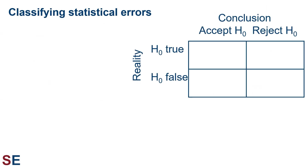There are two basic types of errors we can make when we use sample data to test a hypothesis about a population. In the diagram to the right, we've shown a standard way of thinking about this. We have a null hypothesis about reality that is either true or false. When we collect our data and perform a statistical test, we will conclude that the null hypothesis is true and accept it, or decide that it is false and reject it. Technically, we don't accept a null hypothesis — we fail to reject it — but let's go with these terms for now.